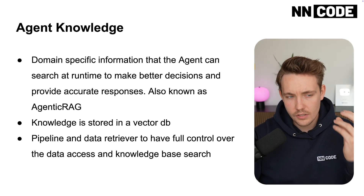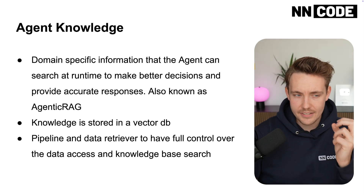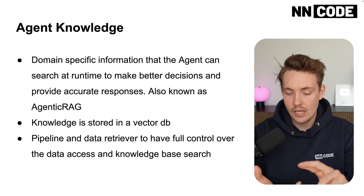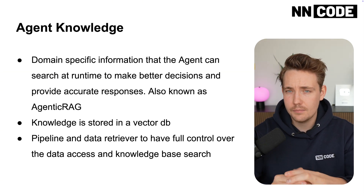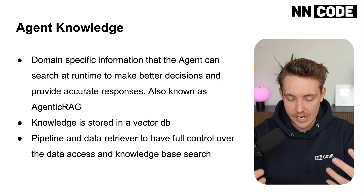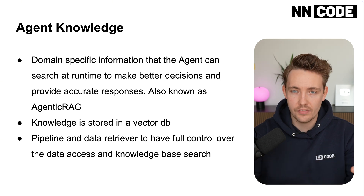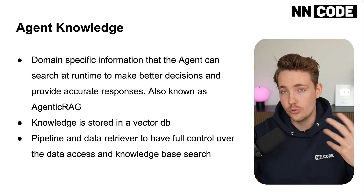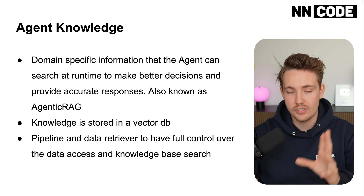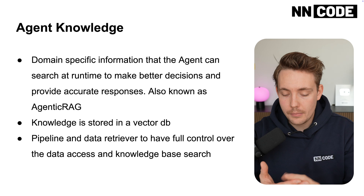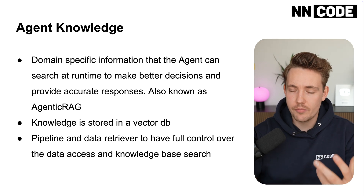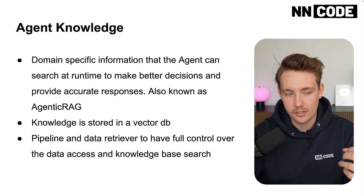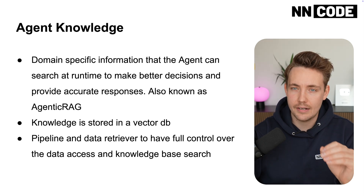Let's talk about how we can give agents access to knowledge — domain specific information, RAG systems, memory, and basically how we can give our agents access to a lot of data. When talking about agent knowledge, it's domain specific information that the agent can search at runtime to make better decisions and provide accurate responses.